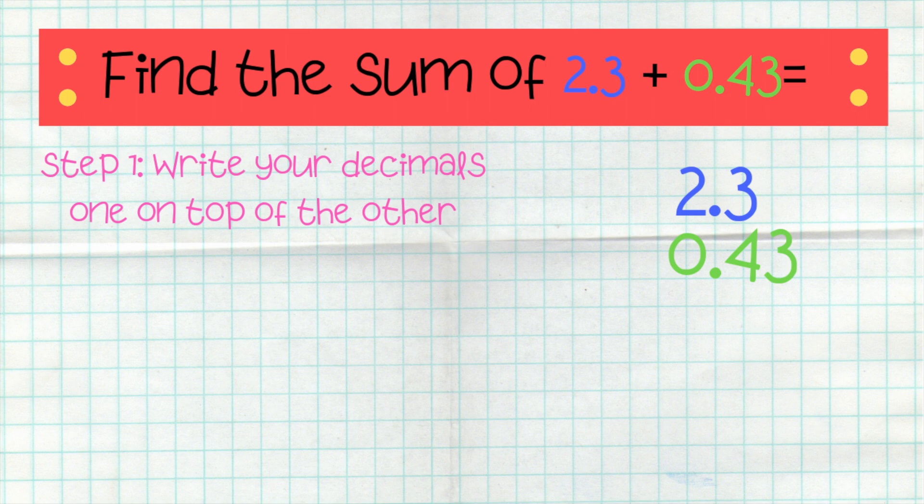So, you have to transition your mindset. The first step is to write your decimals one on top of the other. Here, I wrote 2.3 first because that was the larger decimal. Either way, it doesn't matter. You'll get the same answer. And then, I wrote the smaller number on the bottom.